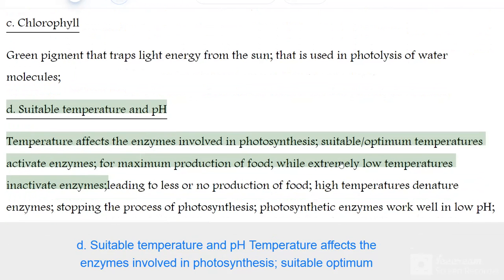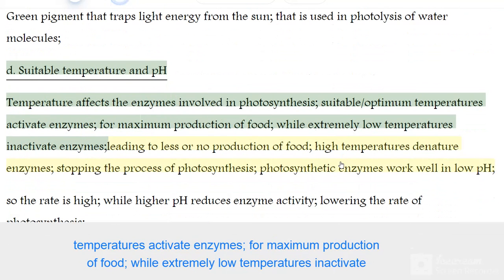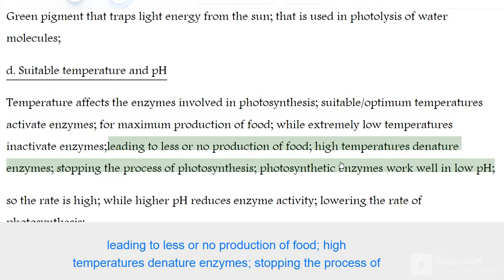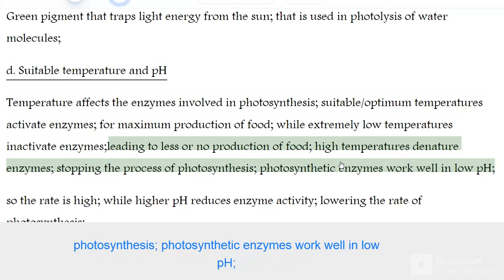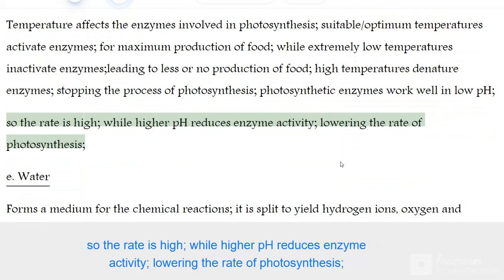Temperature and pH affect the enzymes involved in photosynthesis. Suitable optimum temperatures activate enzymes for maximum production of food, while extremely low temperatures inactivate enzymes, leading to less or no production of food. High temperatures denature enzymes, stopping the process of photosynthesis. Photosynthetic enzymes work well at low pH so the rate is high, while higher pH reduces enzyme activity, lowering the rate of photosynthesis.